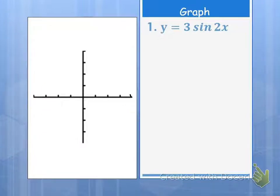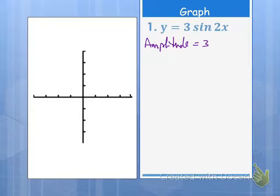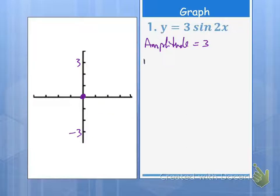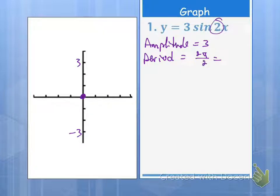So let's put that all together. Here's our first graph: y equals 3 sine 2x. Our amplitude is just going to be 3. It's a sine graph, so our amplitude is 3, which means we're still going to start at 0 and go from 3 to negative 3. Now, our period — that comes from 2π divided by b, and b right here is 2. So our period is π.